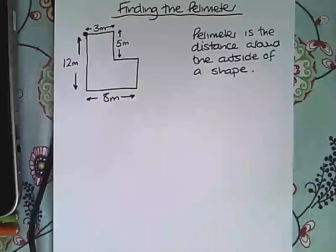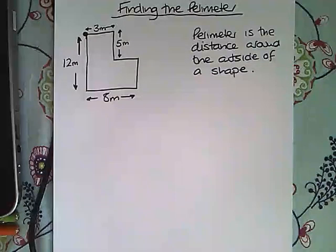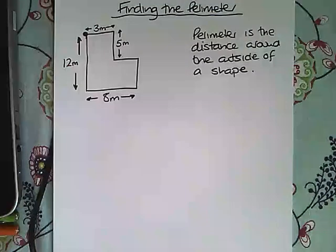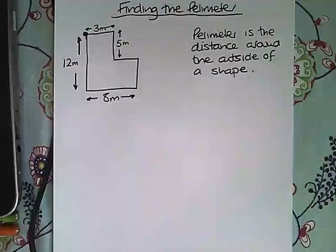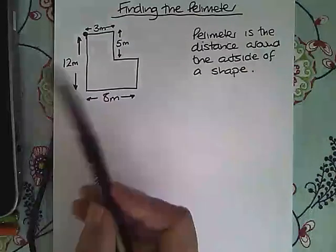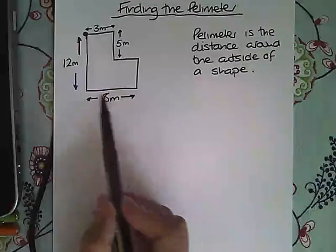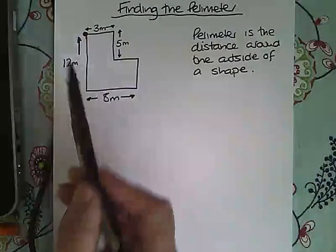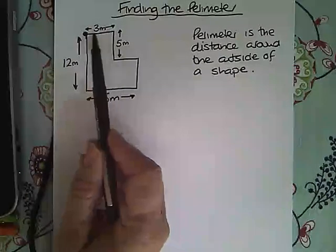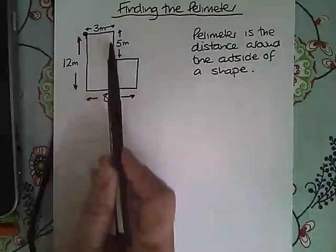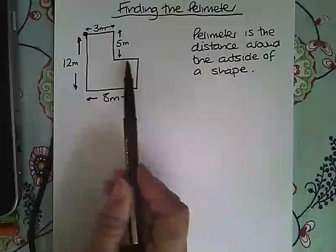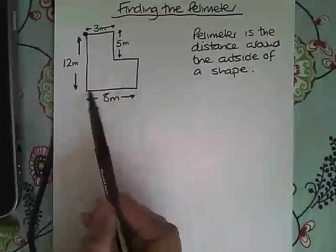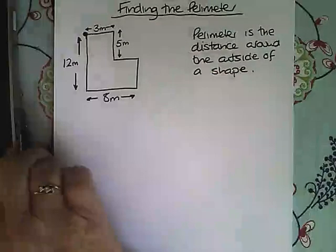Which is fine but some of these lengths are missing so before we start finding the perimeter by adding all the lengths together we need to work out some of the missing sides. If I look at this horizontal distance here, the shape is 8 metres wide, this part of it is 3 metres, so that means that this missing distance here is the rest of the 8 metres, which is 8 take away 3, which is 5 metres.